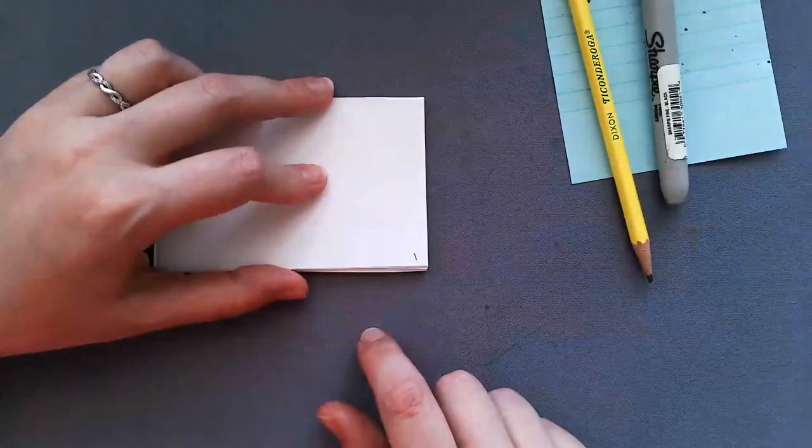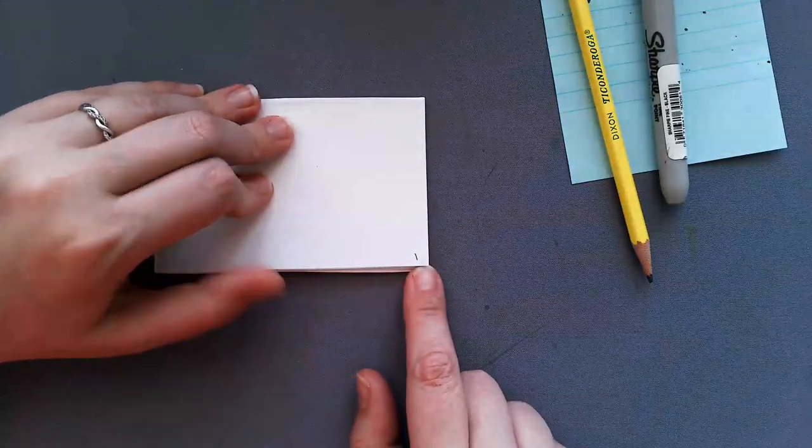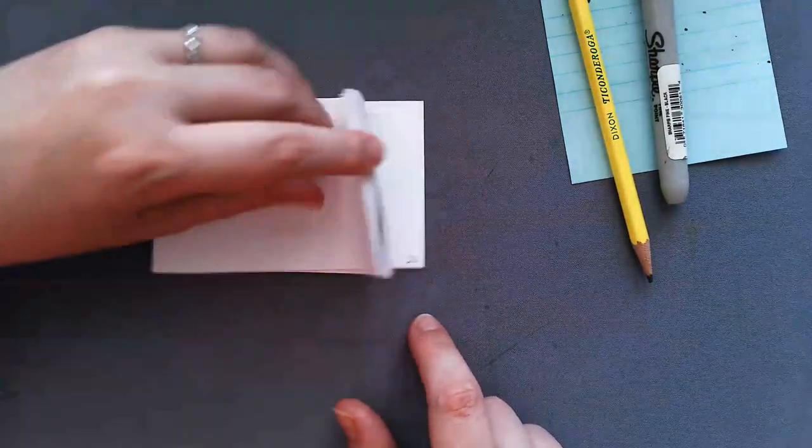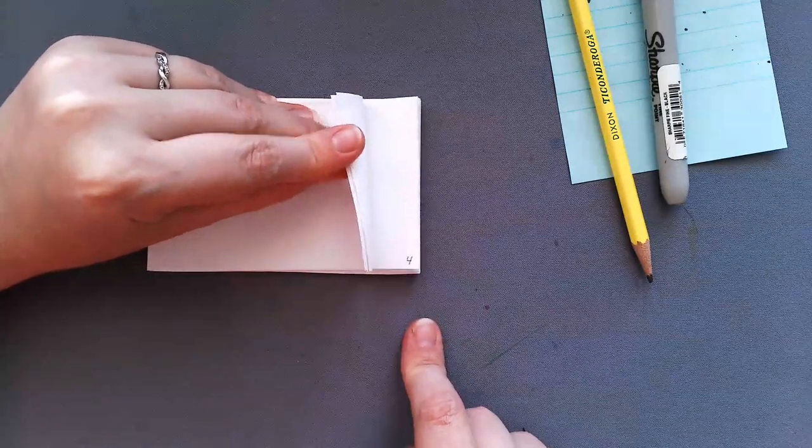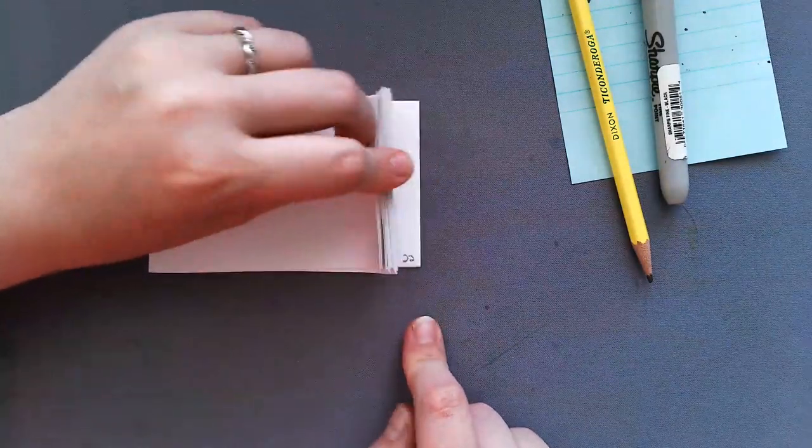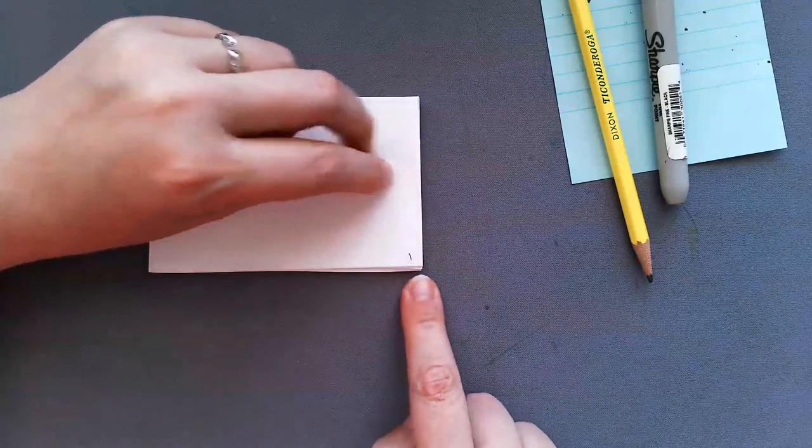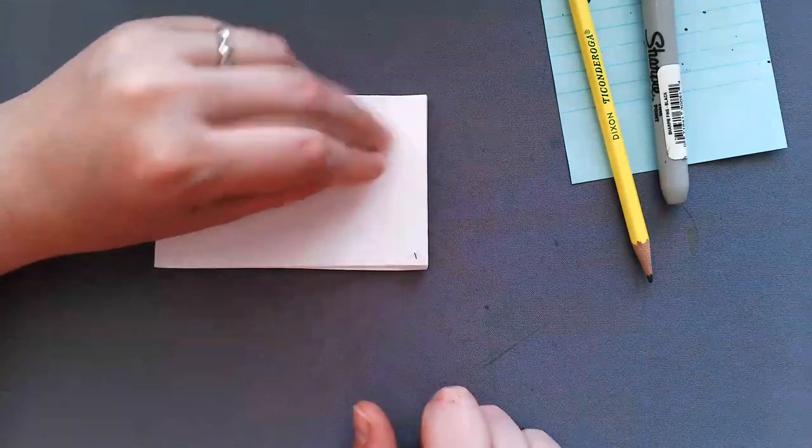The first thing that I recommend doing with your book is numbering your pages. So I already did that part. I went through and numbered all of my pages 1 through 24. So take a minute before you start drawing and number your pages. I just did them real small in the bottom corner. That will help you keep track of where you are in your book when you're drawing.